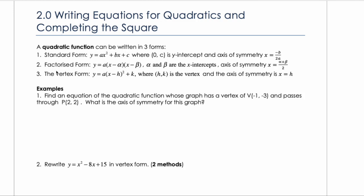Here are the three forms of a quadratic again. This is standard form. The axis of symmetry in standard form is x equals negative b over 2a. That's the axis of symmetry — it's always x equals negative b over 2a. You can get the axis of symmetry by looking at standard form, and this actually comes from the quadratic formula.